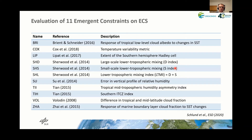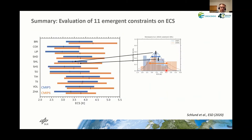In our study, we evaluated 11 different emergent constraints. The first is about the response of tropical low-level cloud albedo to changes in sea surface temperature. Then a temperature variability metric, the extent of the southern hemisphere Hadley cell, and three constraints proposed by Sherwood et al.: the LTMI (a sum of large-scale and small-scale components), an error in the vertical profile of relative humidity, two by Tian about the tropical mid-tropospheric humidity index and the southern ITCZ index, a difference in tropical and mid-latitude cloud fraction, and the response of marine boundary layer clouds to sea surface temperature changes.